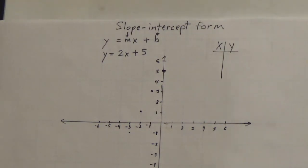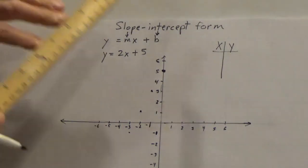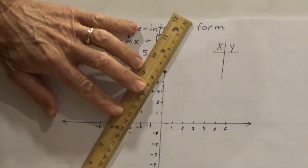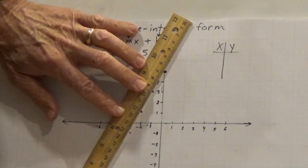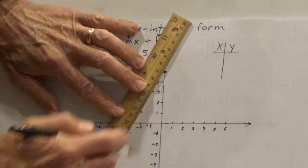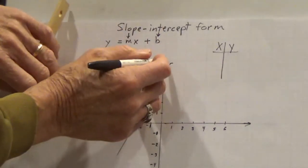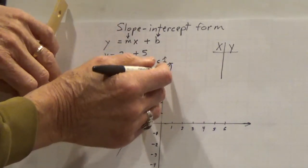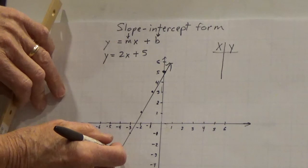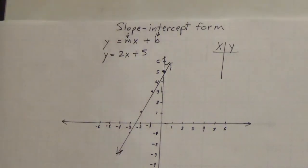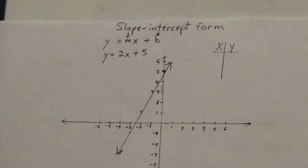Now I'm going to put on my graph. Connect the two extreme points and the other points should fall in line. And there you have the graph of that line. So if you have slope-intercept form, you don't even have to get any points for the line in order to have the graph.